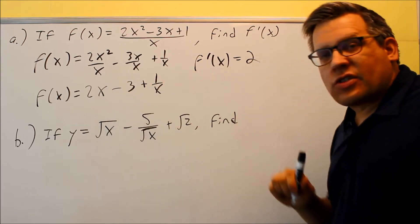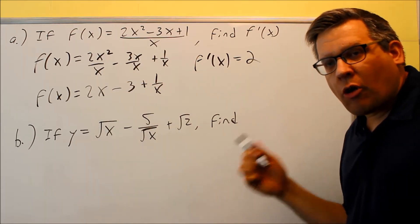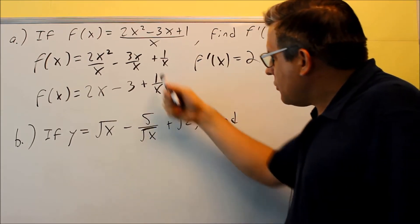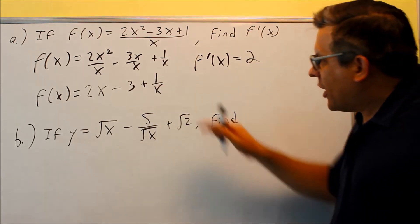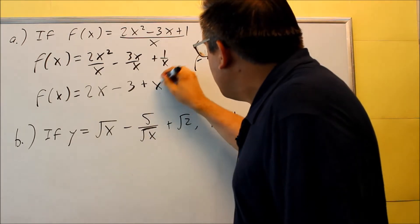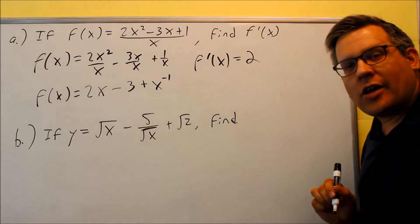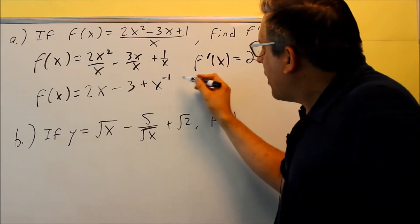The derivative of negative 3, that's a constant. The derivative of a constant is always going to be 0. Now this one over here, the 1 over x, we can't simplify that, but maybe I'd like to go ahead and change that into x to the negative 1 to make it easier, so then that way I can apply the power rule to that.